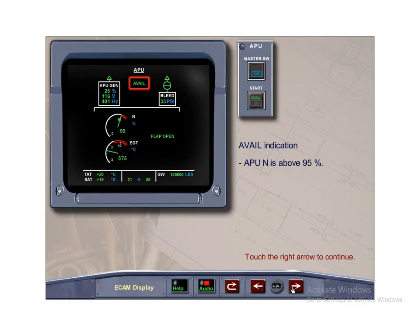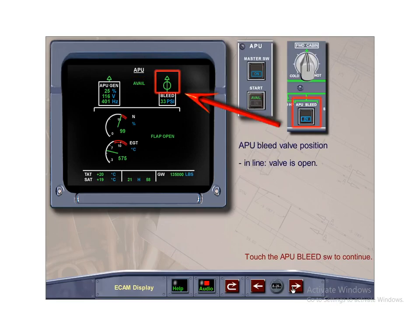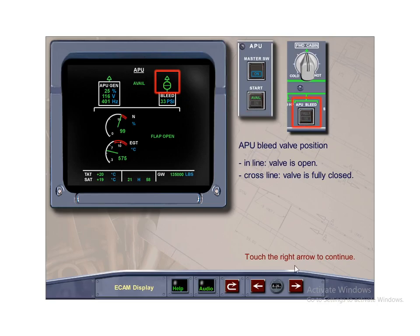The AVAIL indication is displayed in green when the APU speed is above 95%. The AVAIL light also illuminates on the APU start push-button switch. The APU bleed valve position is shown on the upper right ECAM APU page. When the APU bleed push-button switch is placed on, a vertical line is displayed with an arrow, indicating the valve is open and supplying the pneumatic system. A cross line indicates the valve is fully closed.